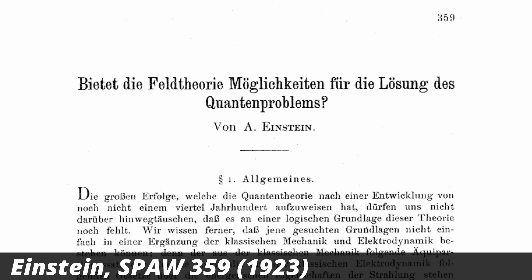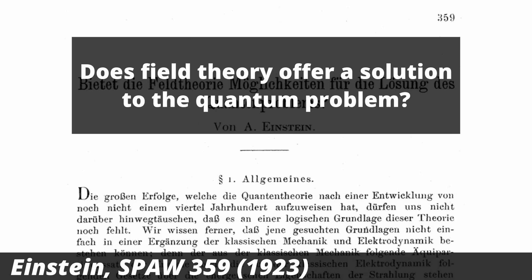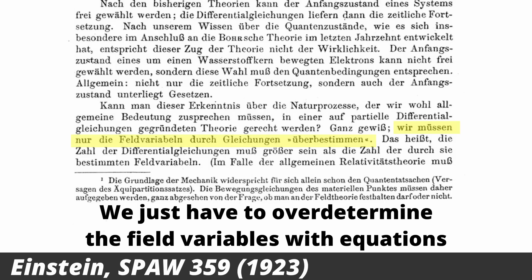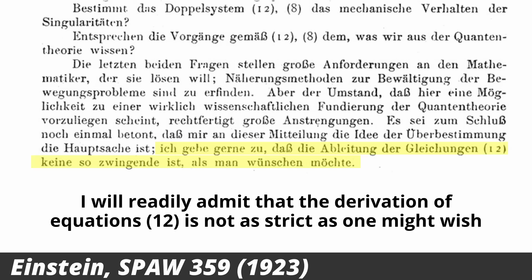In 1923, he published another paper titled 'Does field theory offer a solution to the quantum problem?' In this paper, he basically says that his previous idea to make matter from spacetime didn't work because there are some equations missing. He then guesses some equations that might do the job, but again concludes that this doesn't work.